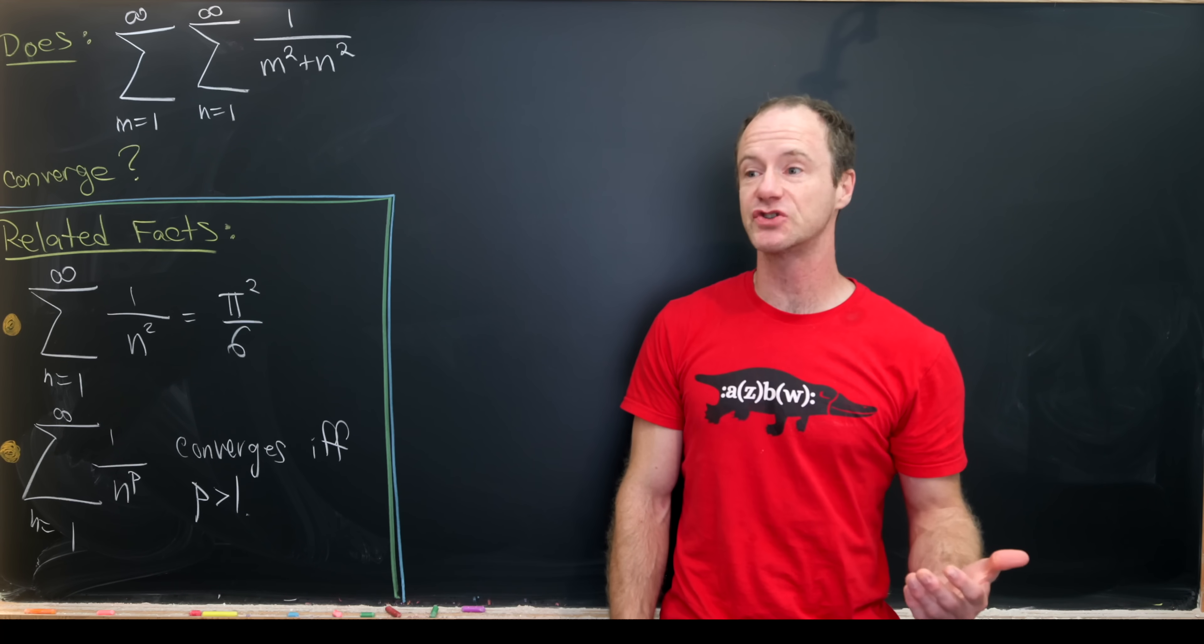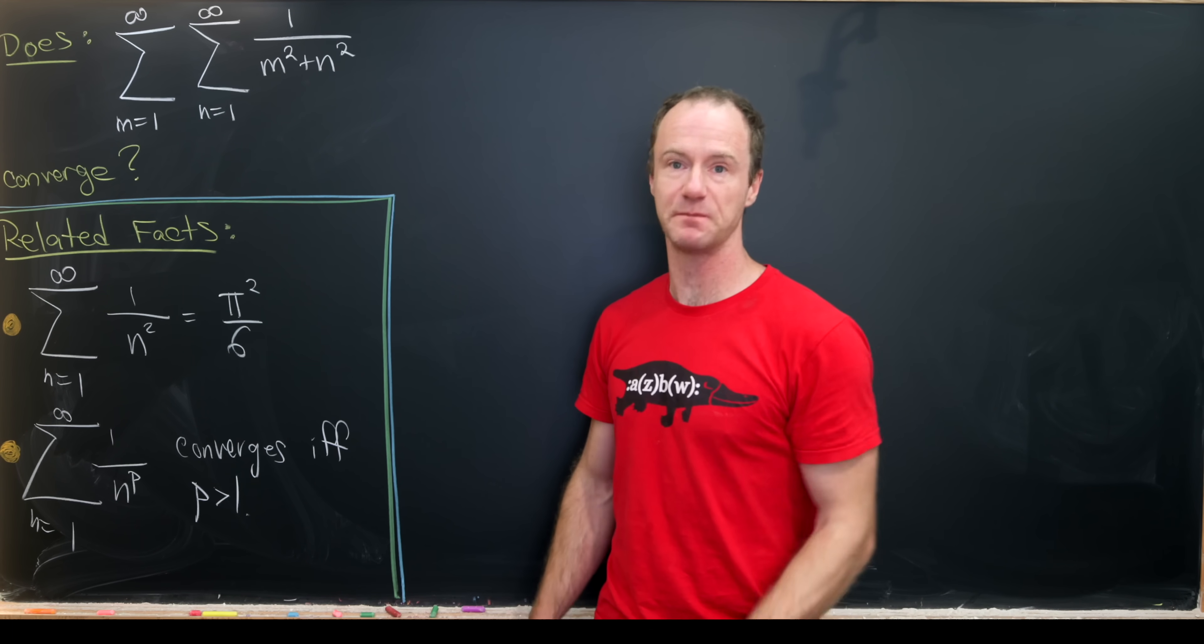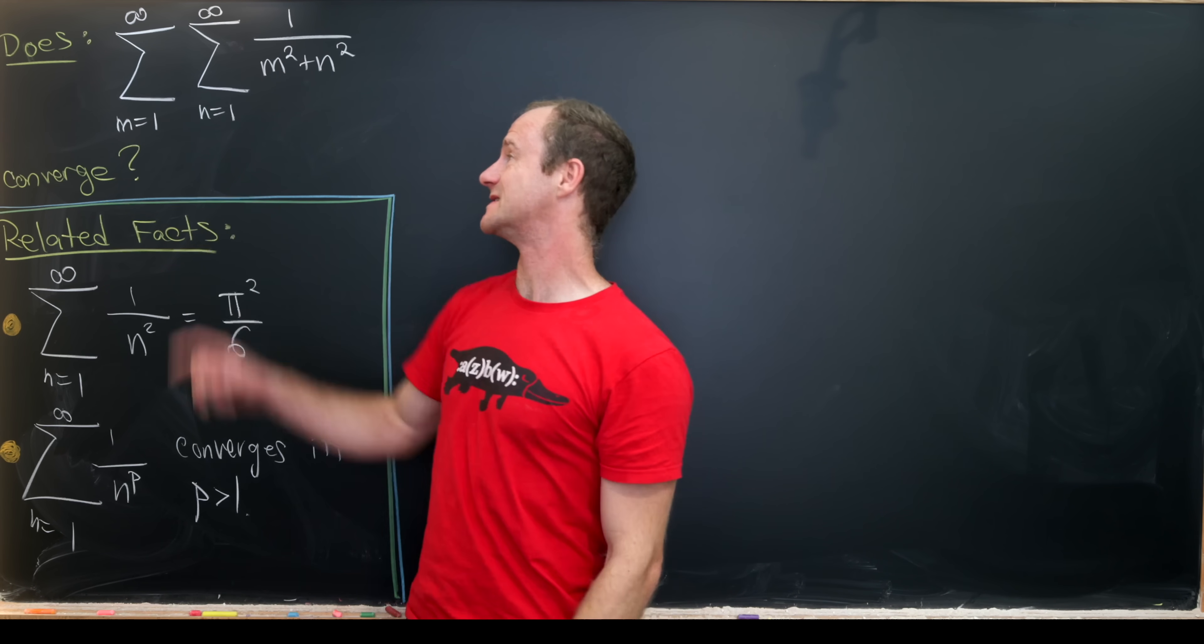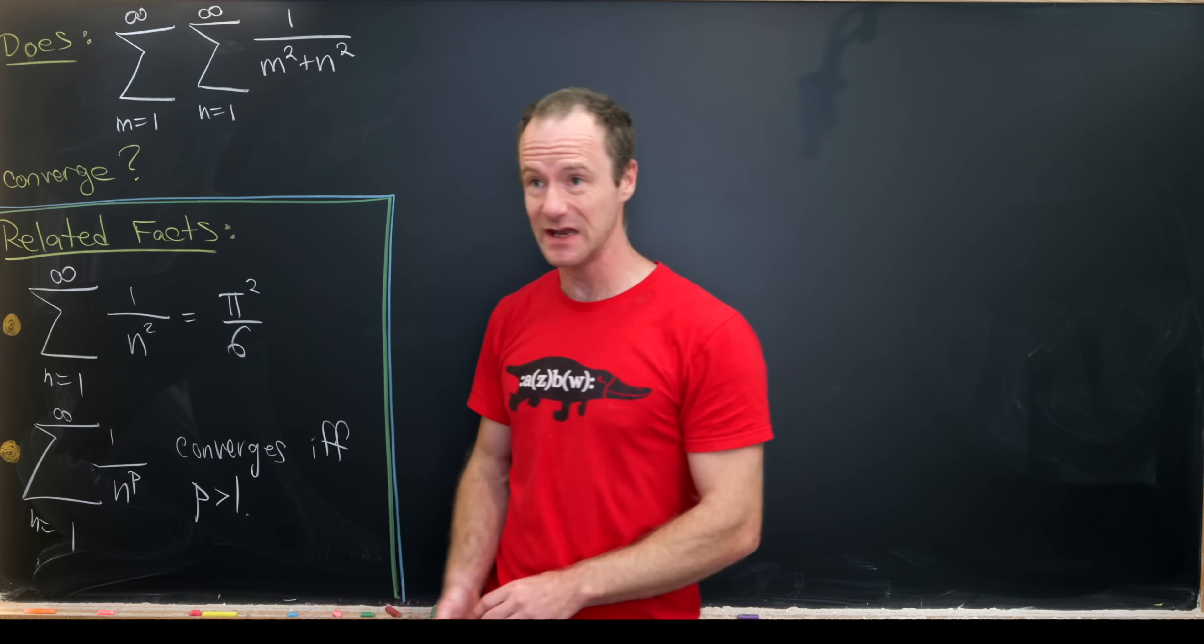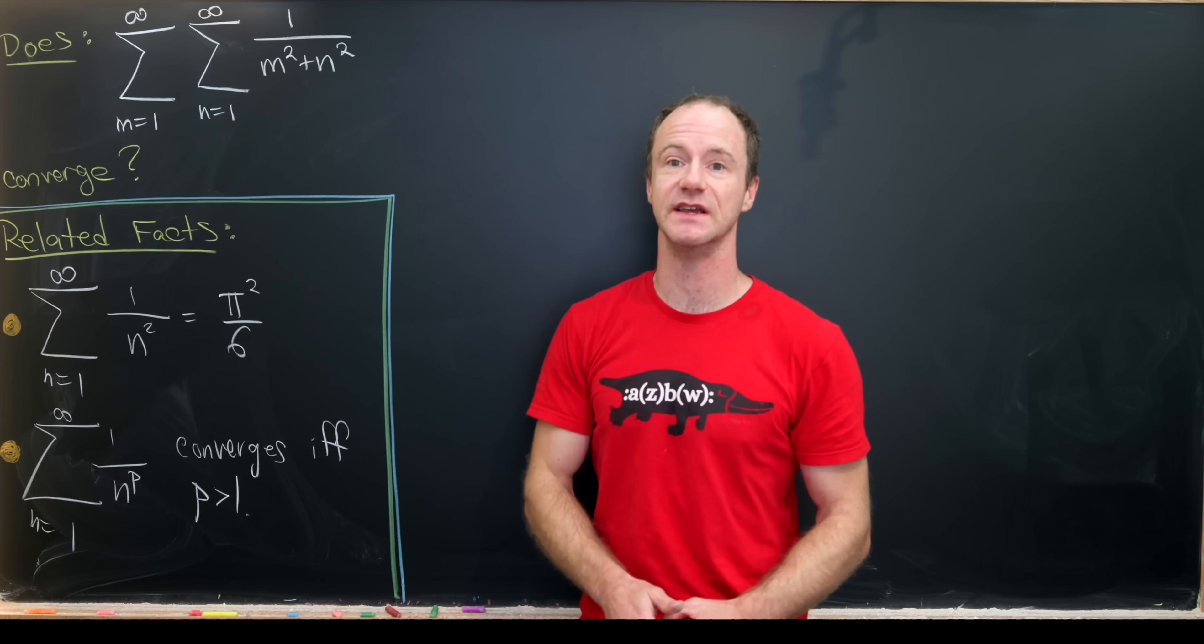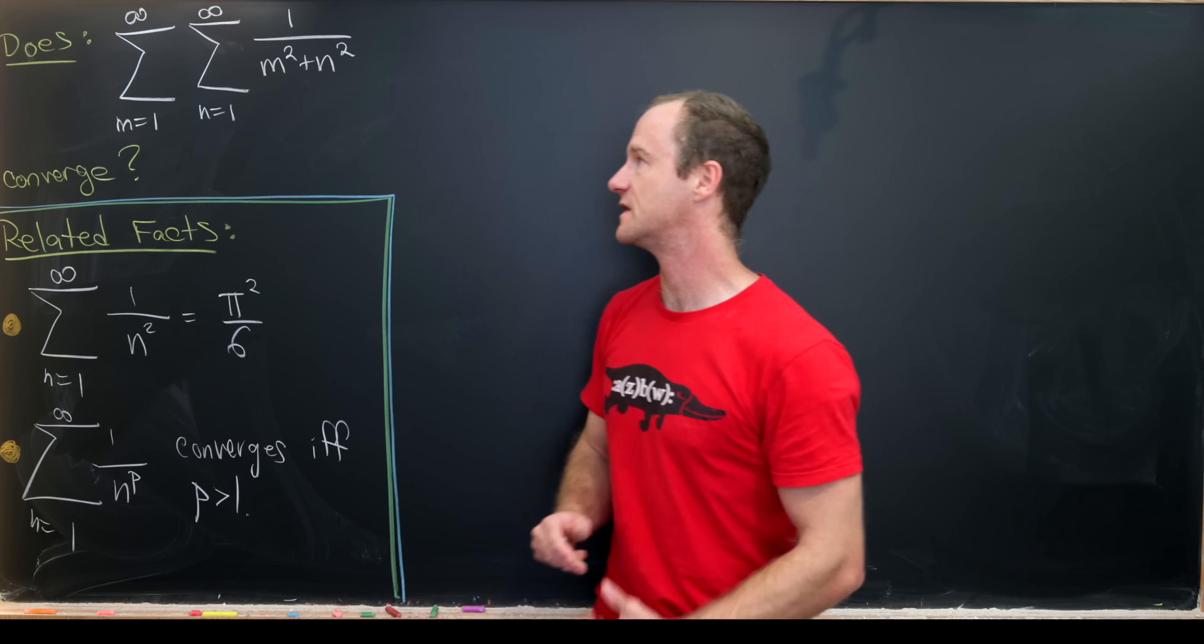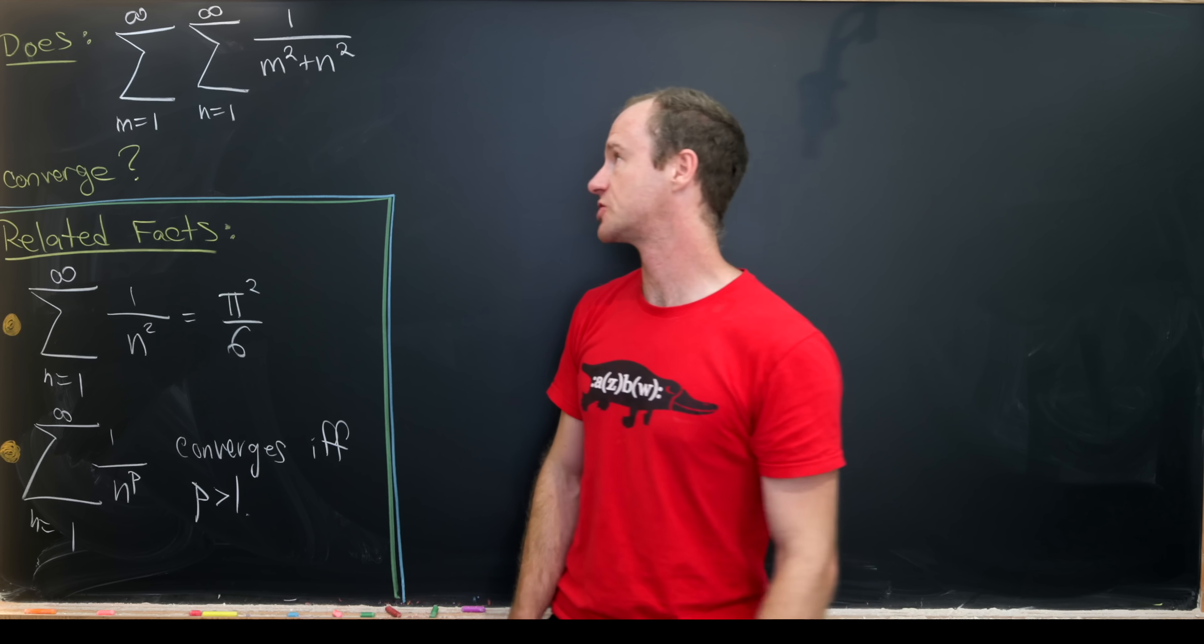Today we're going to explore a pretty interesting infinite double sum or maybe doubly infinite sum. We've got the sum as m goes from 1 to infinity of the sum as n goes from 1 to infinity of 1 over m squared plus n squared. Our goal is to determine whether or not this sum converges. Does it converge or does it diverge?